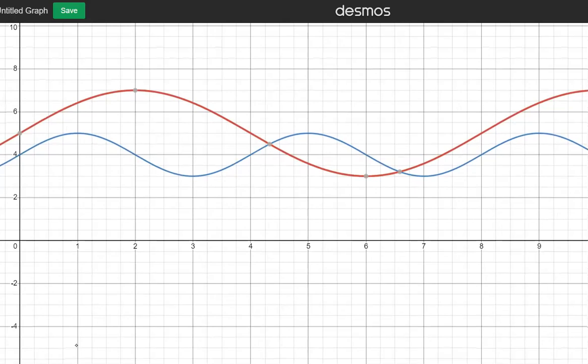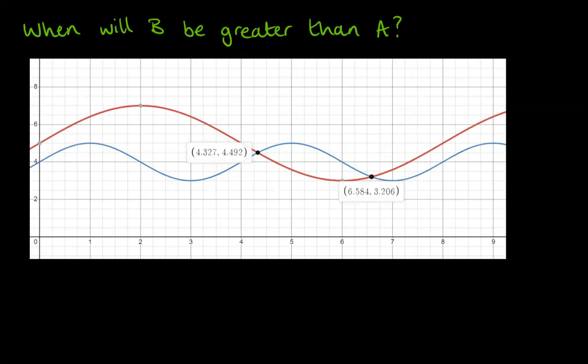So if we've got these two points here as our starting ones, we'll go from there. So if we take a look at this graph, we can see that it goes above A, B goes above A at 4.327, and it stops at 6.584. We express it like this in an inequality.